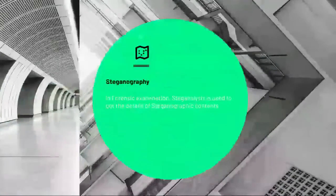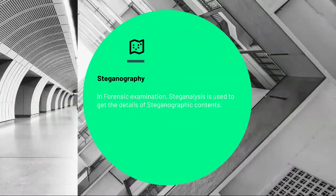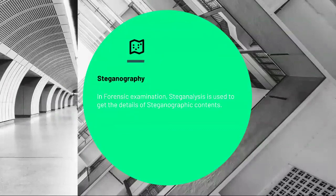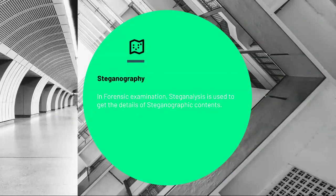The last technique is steganography — one of the techniques used to hide data via the process of hiding data inside a picture or digital image. An example would be hiding illicit images or other information that a criminal does not want discovered. Computer forensics professionals can combat this by looking at the hash of the file and comparing it to the original image if available. While the image may appear exactly the same, the hash changes as the data changes. In forensic examination, steganalysis is used to get the details of steganographic contents.